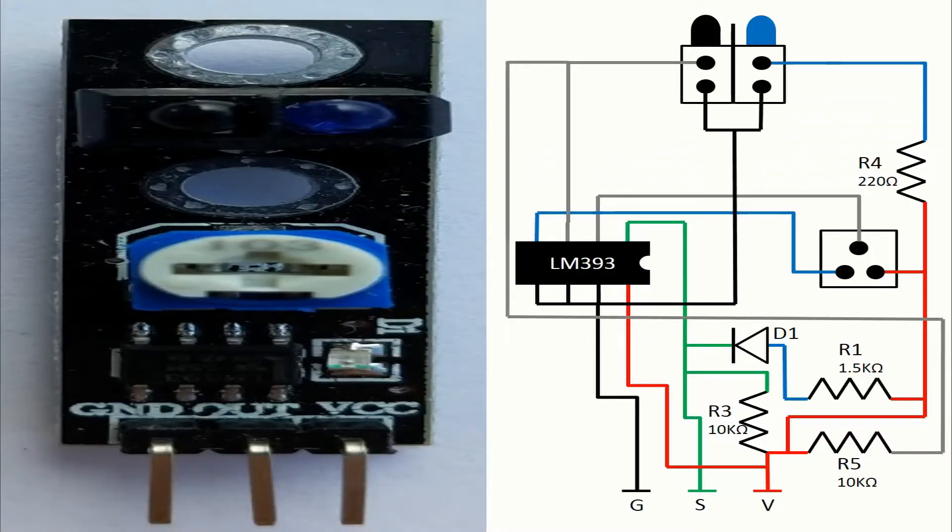Let's talk about the pins. The pins in this module are three. We have the ground pin with a GND sign, the voltage pin with a VCC sign, and of course the pin of the signal with an OUT sign.